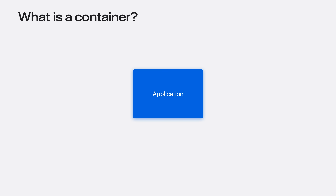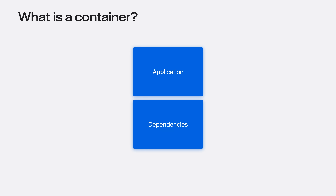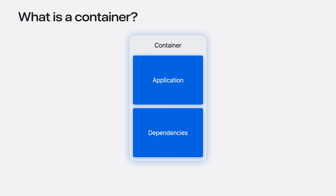Containers do this by allowing developers to package their application and its dependencies. Dependencies can include binaries, dynamic libraries, and assets. Containers allow different versions of those dependencies from the host machine as well as other containers. The result is packaged into a single deployable unit — a container.